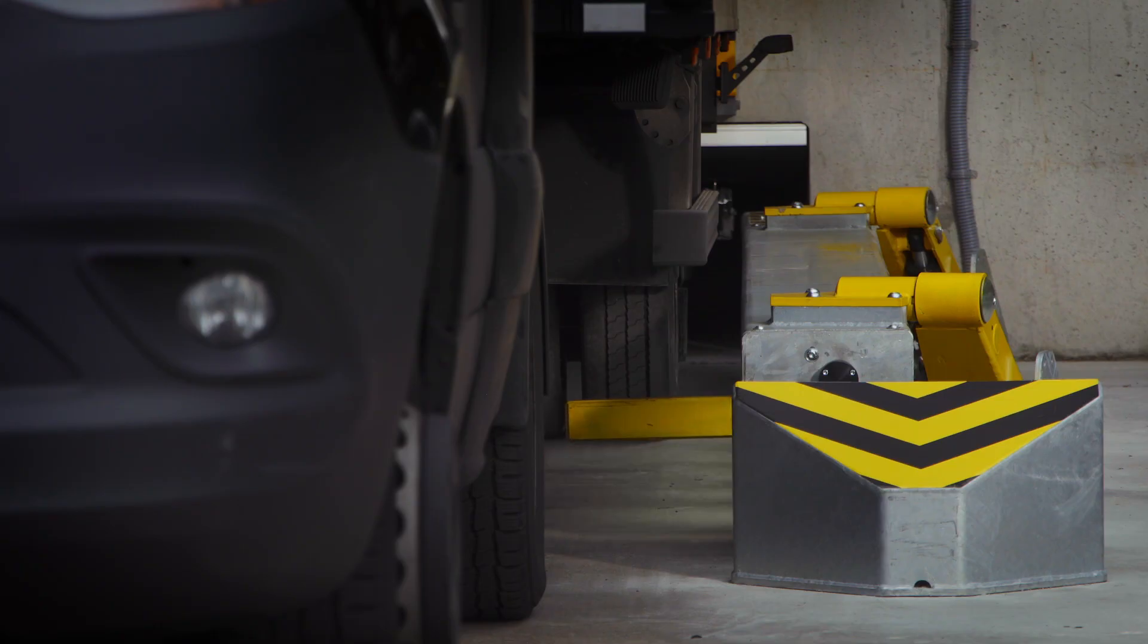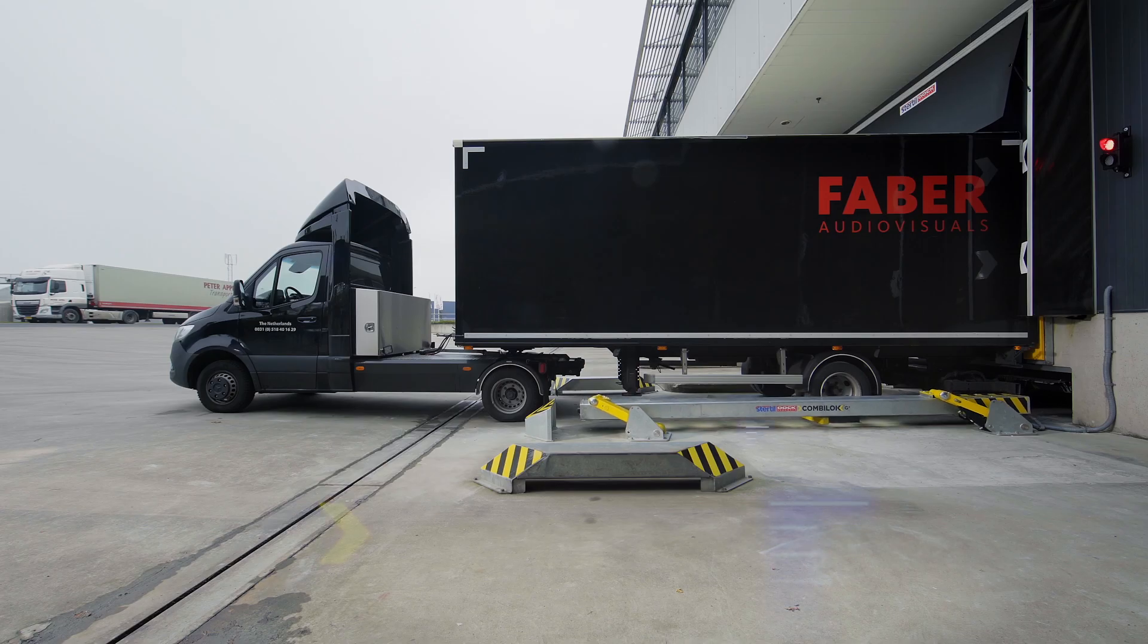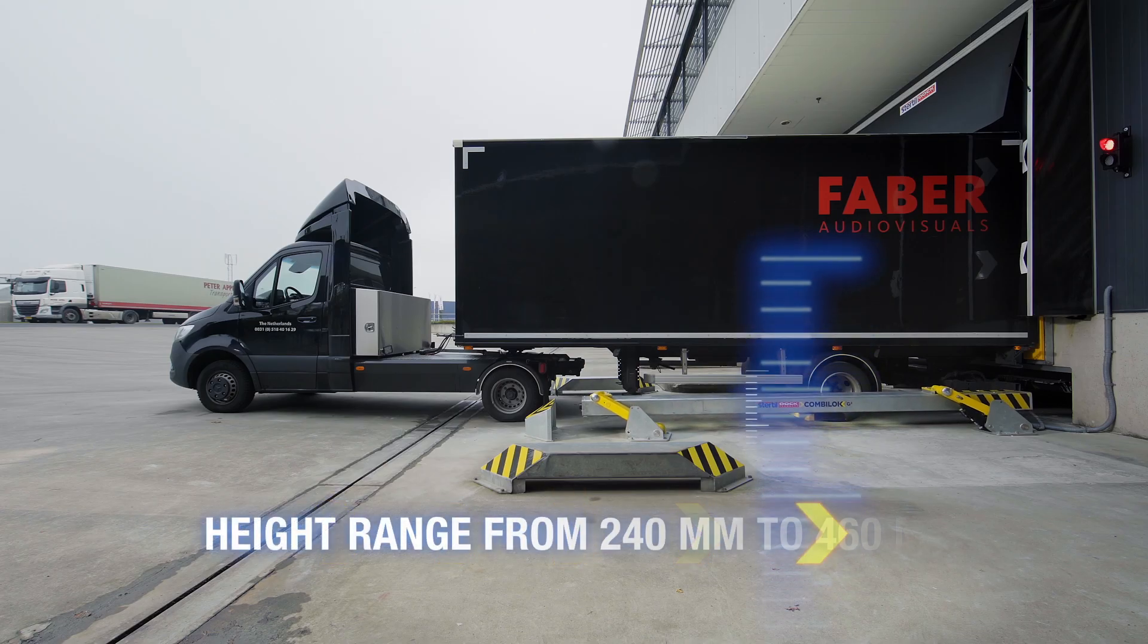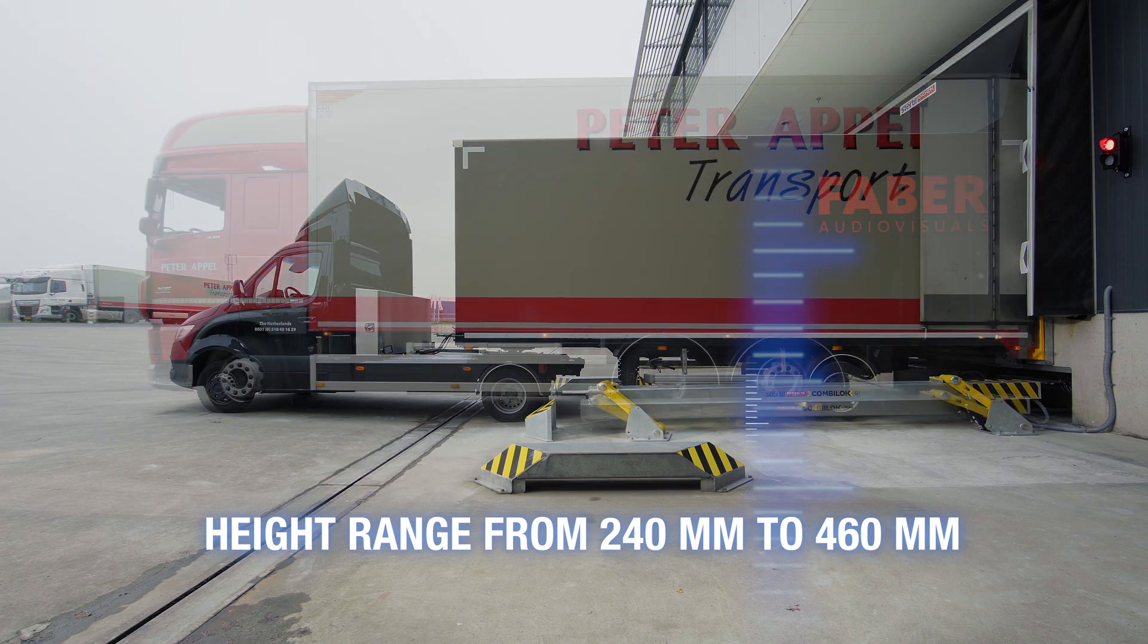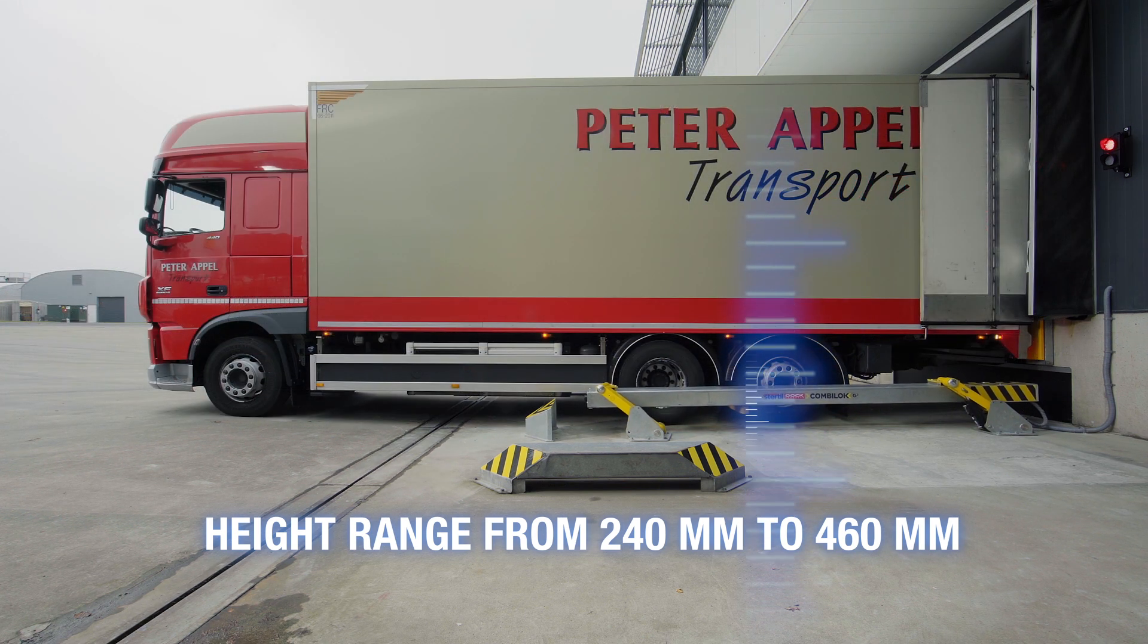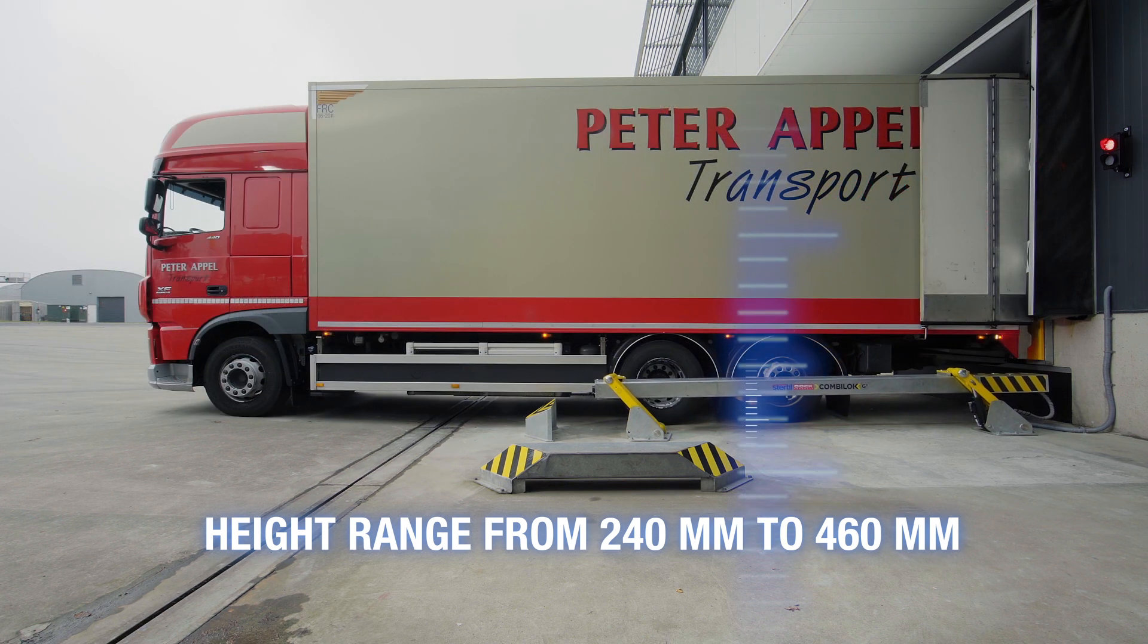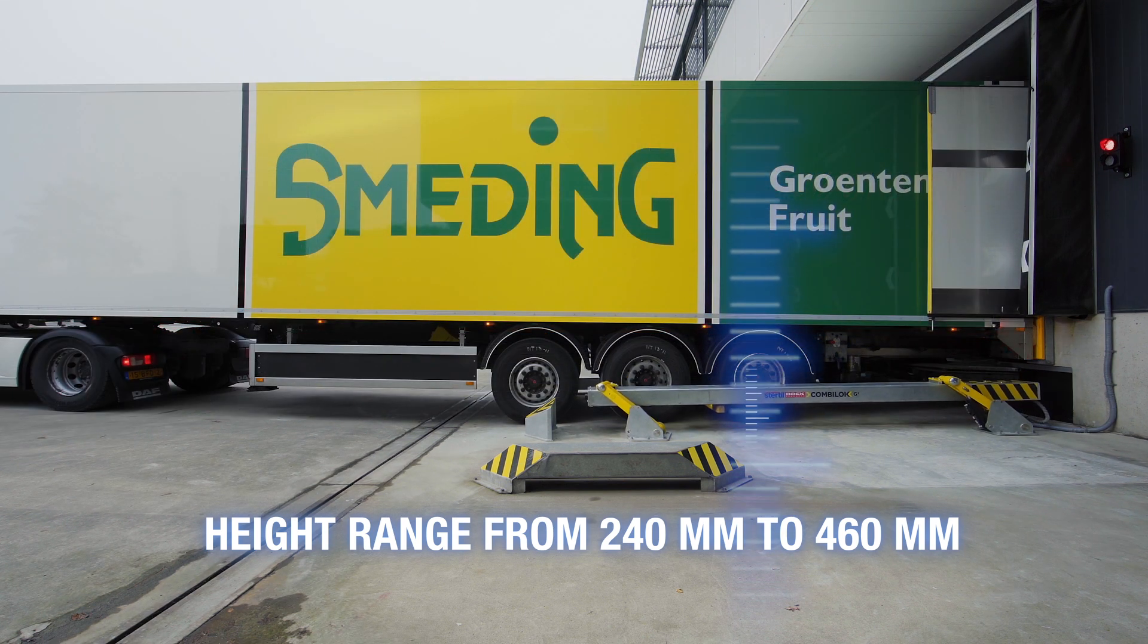Sturtle Dock Products' unique innovative engineering means that the CombiLock G2 facilitates a programmable locking height range from a mere 240mm to an incredible 460mm. Thus, ultimate flexibility to match any fleet requirements.